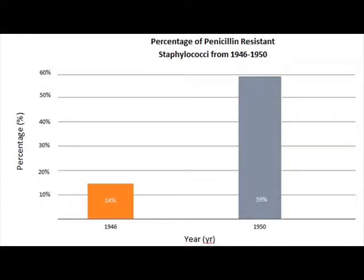People infected with Staphylococci constantly misused Penicillin tablets. This resulted in Staphylococci developing a Penicillin-resistant gene, as shown by the rise of Penicillin-resistant Staphylococci from 14% in 1946 to 59% in 1950. This was exactly what Fleming had predicted — that patients would misuse antibiotics, resulting in harmful bacteria developing antibiotic-resistant genes, and that when antibiotic-resistant bacteria spread to other people, it would lead to a disease pandemic.